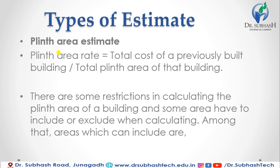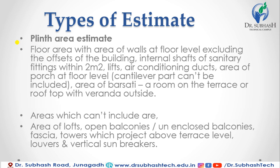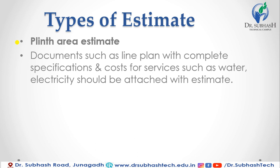There are restrictions in calculating the plinth area. Areas that can be included are: floor area within the plinth, area of walls at floor level excluding offsets, internal shafts of sanitary fittings within two square meters, lifts, air conditioning ducts, area of porch at floor level, and area of a room on the terrace with veranda. Areas not included are: lofts, open balconies, unenclosed balconies, towers projecting above terrace level, and vertical sun breakers.